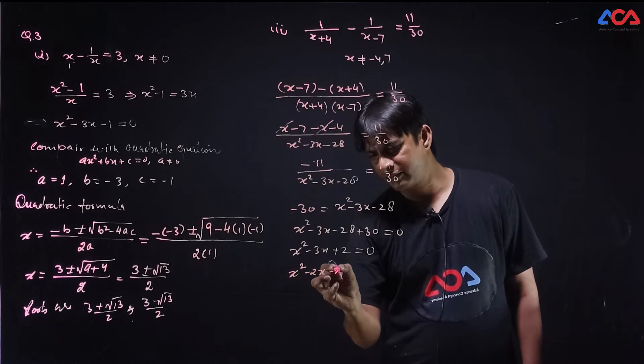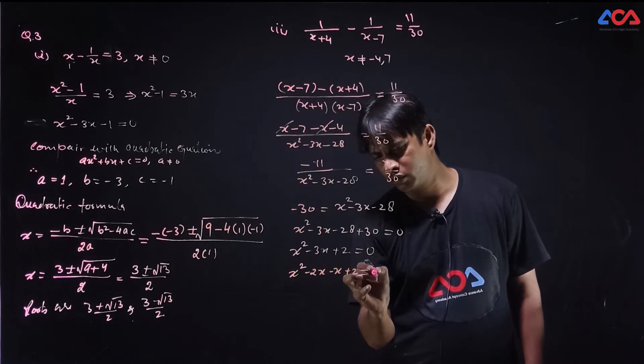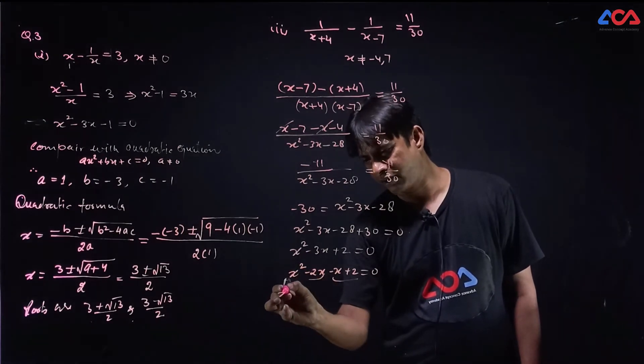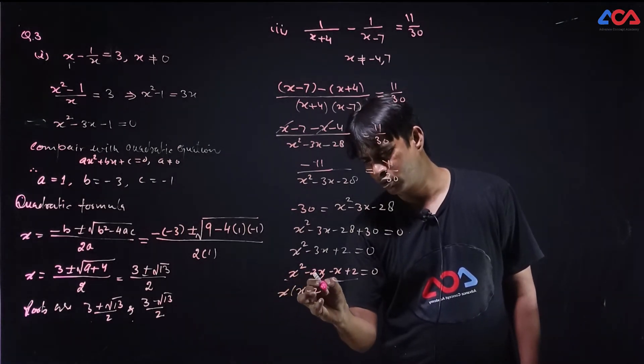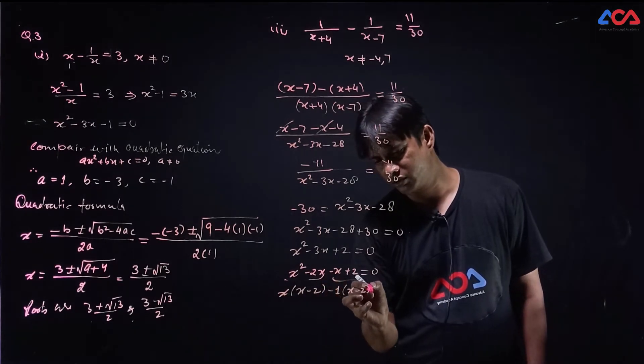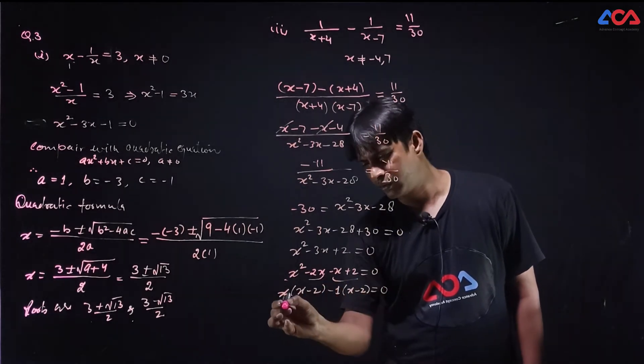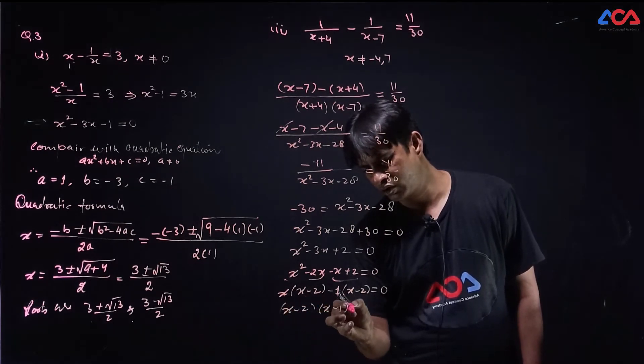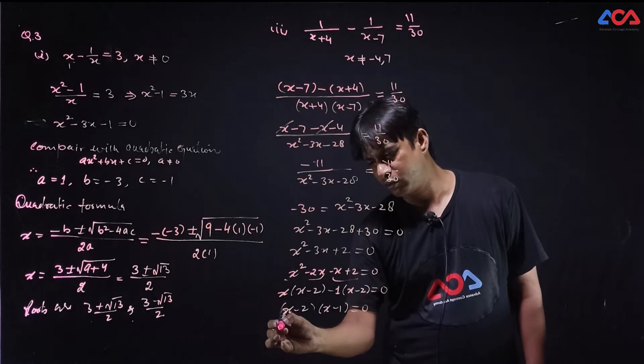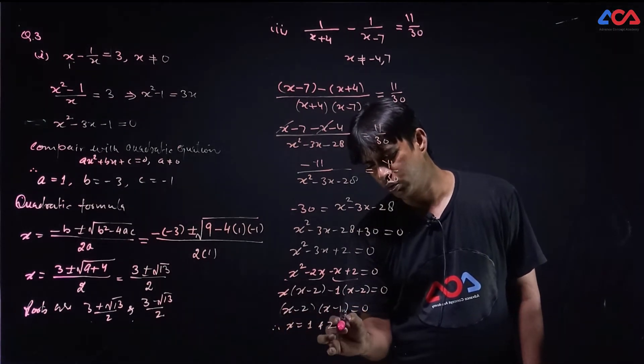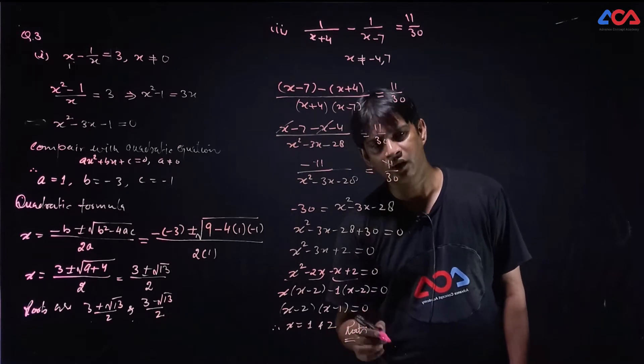2x minus x plus 2 which is equal to 0. From the first two terms x is common, x minus 2. From the next two terms minus 1 is common, x minus 2 which is equal to 0. Therefore x minus 2, x minus 1 which is equal to 0. Therefore x is equal to 1 and 2. We have roots. This is the question.